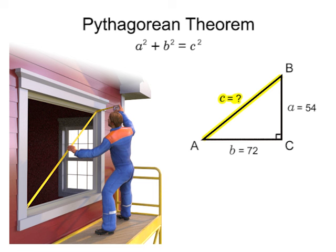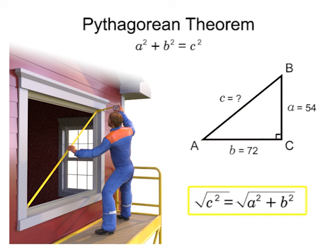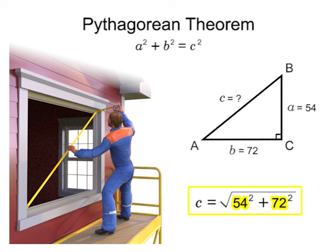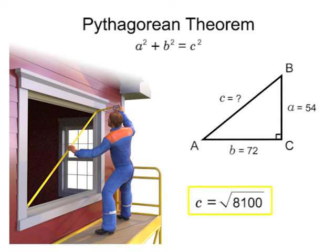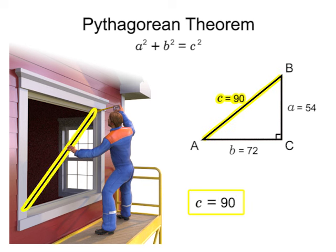Let's find out. First, isolate the variable C by taking the square root of both sides. Then, substitute in the values for A and B. Finally, reduce the expression and simplify. In this example, the hypotenuse of the triangle should be 90 inches. If the diagonal of the window measures 90, then the carpenter knows the window will be square.